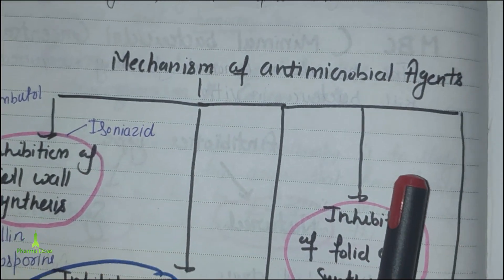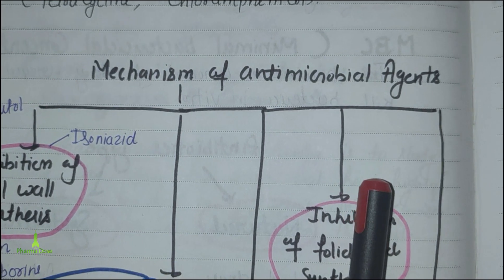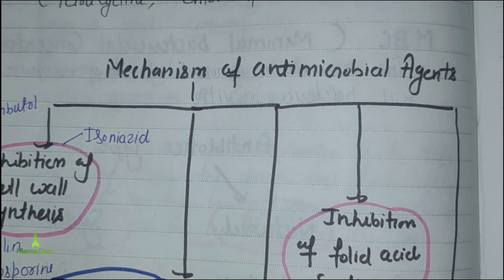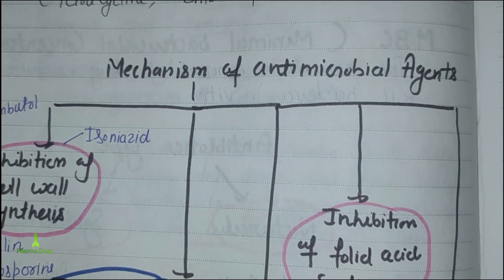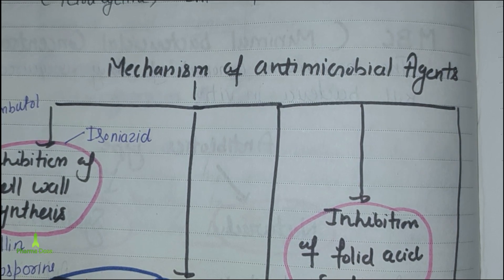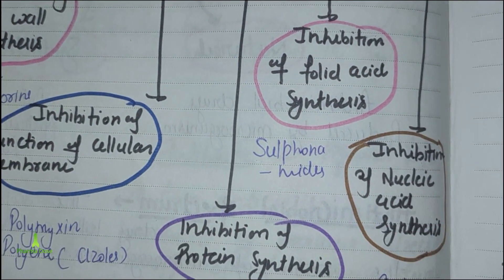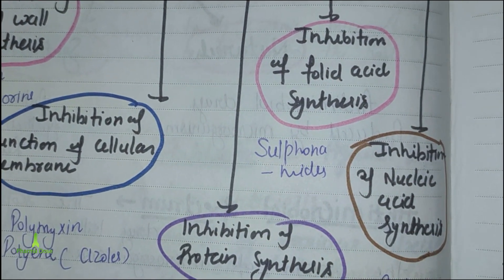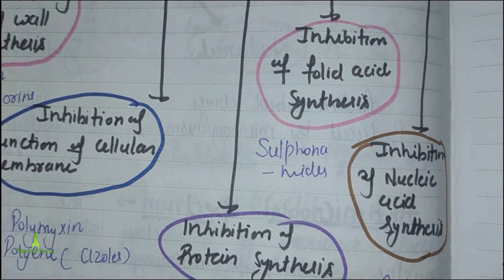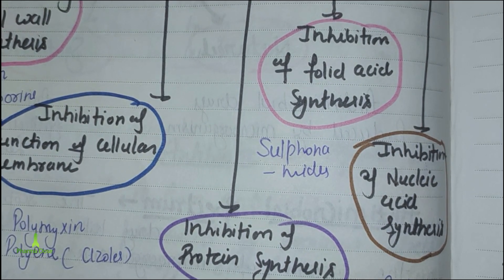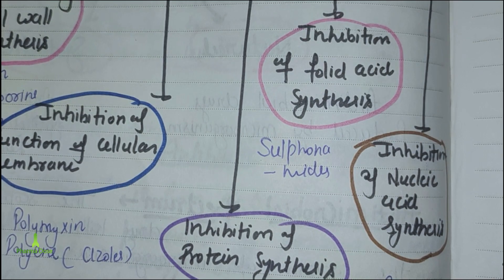So we have five types of antimicrobial drugs: cell wall synthesis inhibitor, cellular membrane function alteration, folic acid synthesis inhibitor, protein synthesis inhibitor, and nucleic acid synthesis inhibitor. We will continue in the next lecture. Thanks.